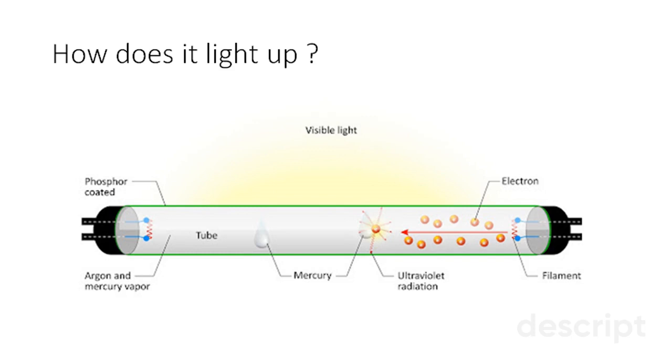Electrons begin traveling across the tube from one cathode to the other. Inside of the glass tube are inert gases and mercury, which are excited by the electrical current. The mercury vaporizes as electricity flows.